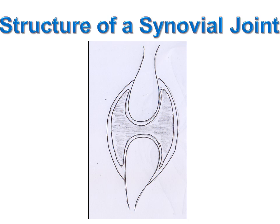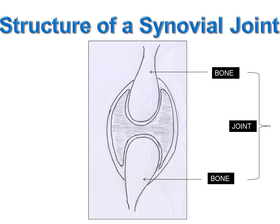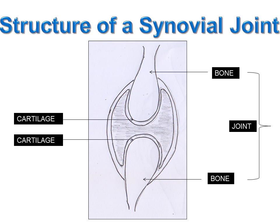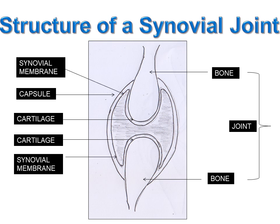Let's understand the structure of a joint. A joint is formed between two bones, and the ends of the bones are covered with cartilages. Cartilage acts as a cushion or shock absorber and reduces friction as the bones move over each other. The two bones are held together with the help of a capsule, which keeps the bones of the joint in place. The inside of the capsule is covered with the synovial membrane, which secretes synovial fluid.